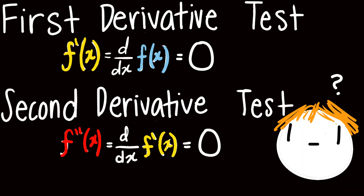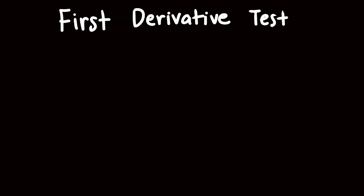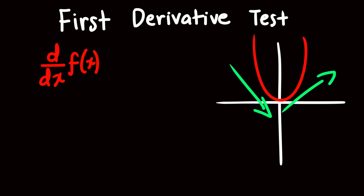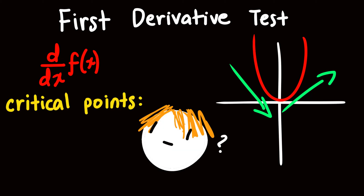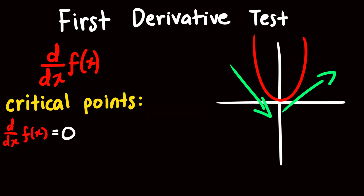What is the first derivative test and what is the second derivative test? The first derivative test is what it sounds like — using the first derivative of a function. What does it determine? It determines whether a function increases and decreases, as well as its critical points. Critical points in derivatives are simply when the derivative is equal to zero.